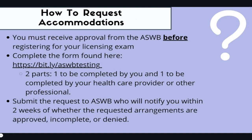You're probably wondering how to request accommodations. You need to request your accommodations before you register for your exam, so make sure you do it before you even sign up, because you'll have to fill out forms to be approved. You can find the link on the ASWB site by searching 'non-standard testing accommodations.' There are two parts: one completed by you with basic information, and the other completed by a healthcare provider or other professional who can confirm you need a test accommodation.